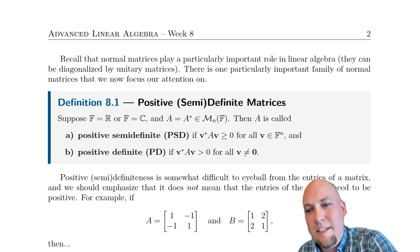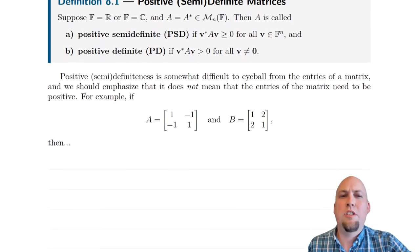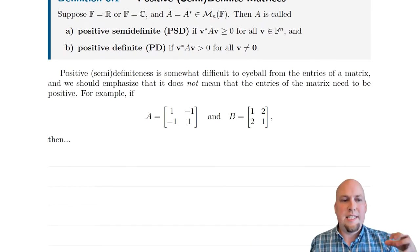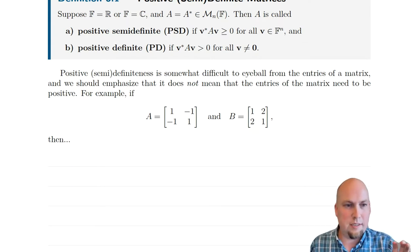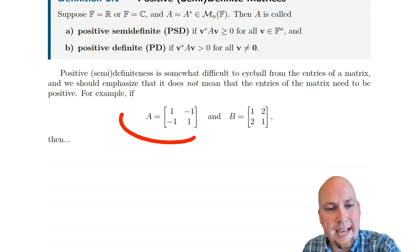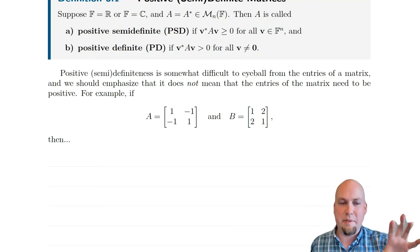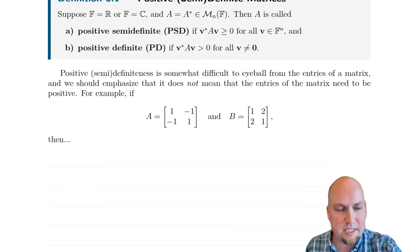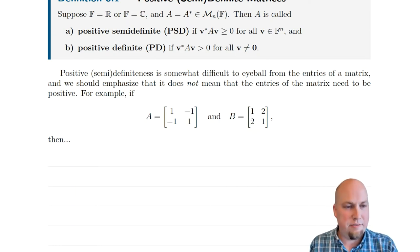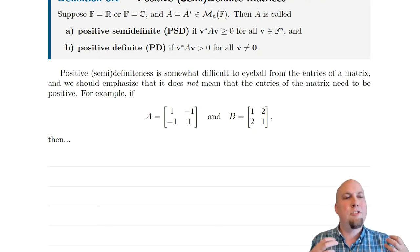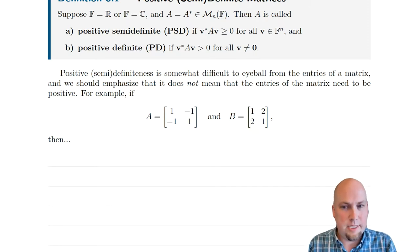Be a little bit careful with this intuition, because our intuition for how matrices behave does not come from what their entries look like. For example, we're going to show that this matrix A is positive semi-definite even though it has negative entries, and we're going to show that matrix B is not positive semi-definite even though all of its entries are positive. Get your intuition from what a matrix does as a linear transformation, not from what its entries look like.